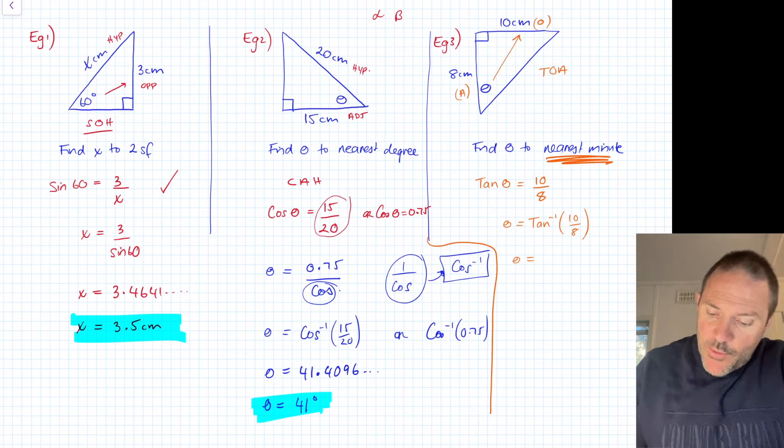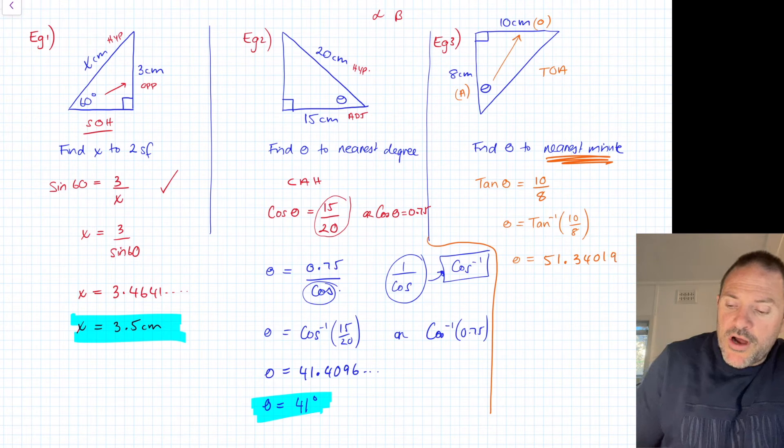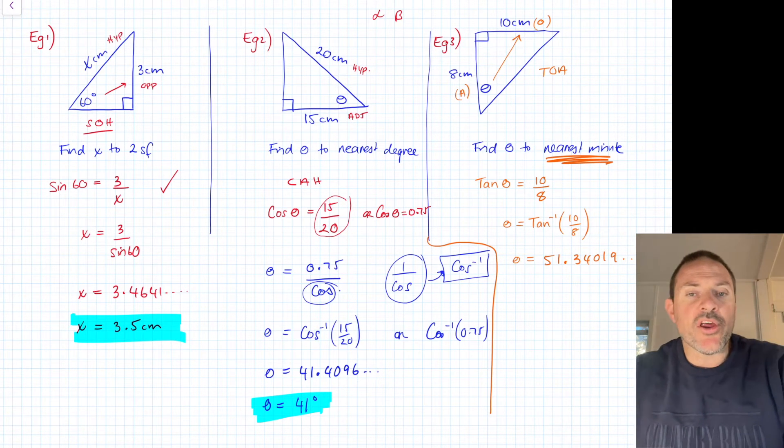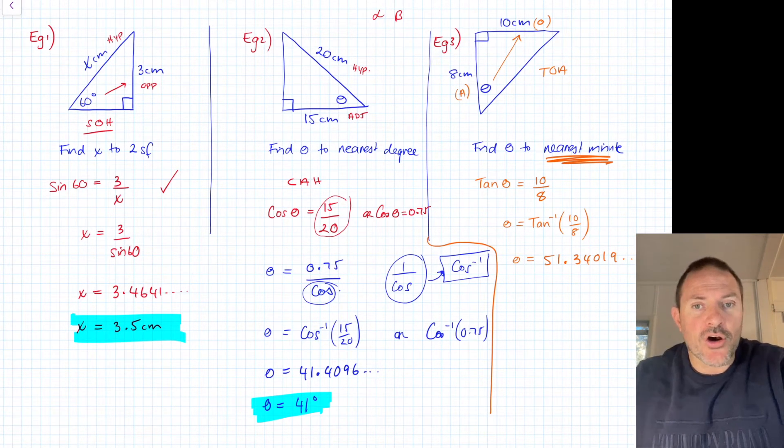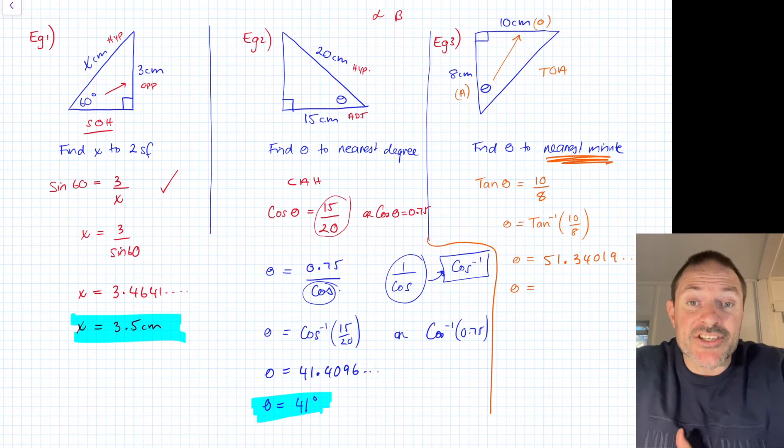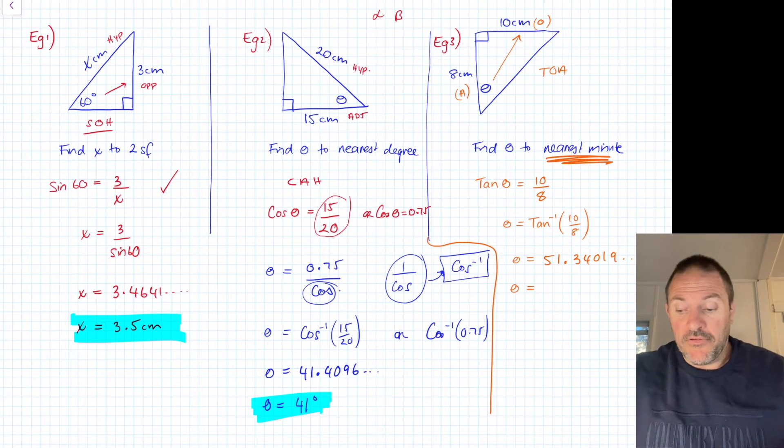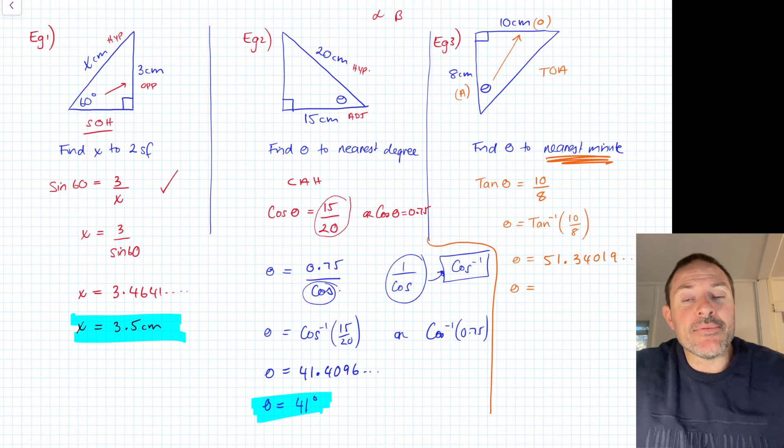Now press equals, and we now get 51.34019 dot dot dot. I generally always write my answer out, the whole answer. I like that, because then you can now round it. Now if it's the nearest degree, 51 degrees, no problems. But this now wants the nearest minute. If it's to one decimal place, 51.3 degrees, you can have decimals. But this wants in terms of degrees, minutes, and seconds.